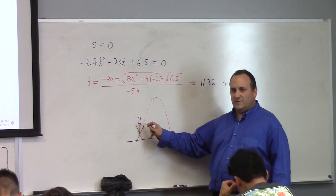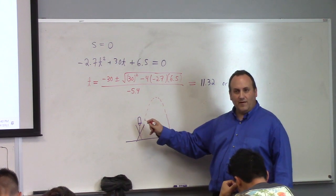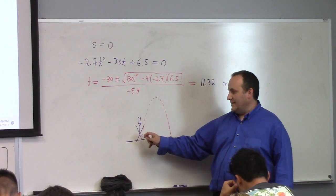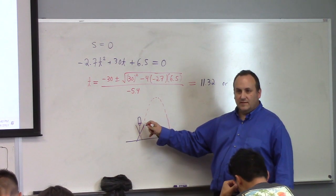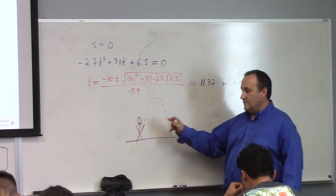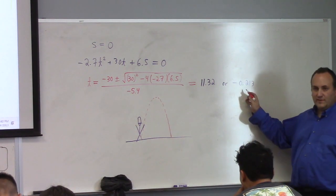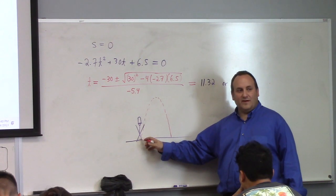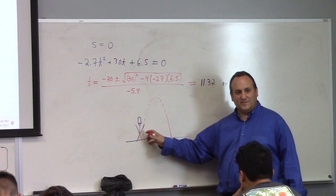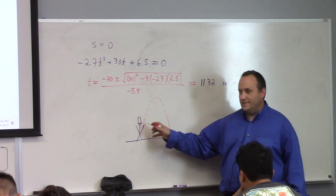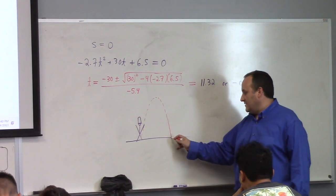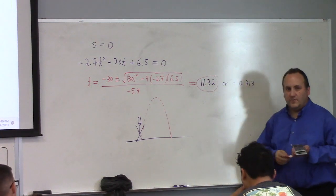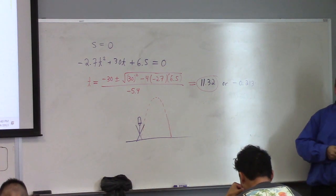So, the math doesn't know the difference between the ball leaving his hand here and it coming from the ground with the same velocity to make it match where it left his hand. So, the math gives you one of the solutions being minus 0.2313. If hypothetically an ant had thrown the ball from the ground such that it lined up with his hand with the same speed, it would be the same trajectory. But, of course, the one we're interested in is this one. So, the answer is 11.32 seconds later it hits the ground.